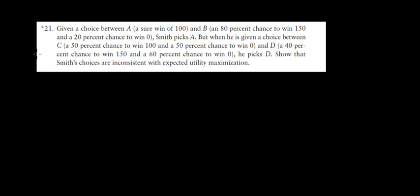Let's have a look at question 21. So we have a choice between gamble A, which is a sure win of 100, and B, which is an 80% chance to win 150 and a 20% chance to win zero.